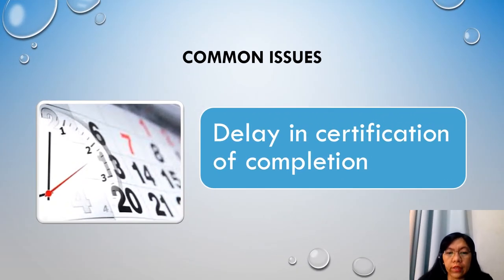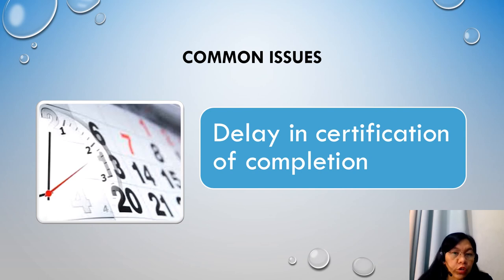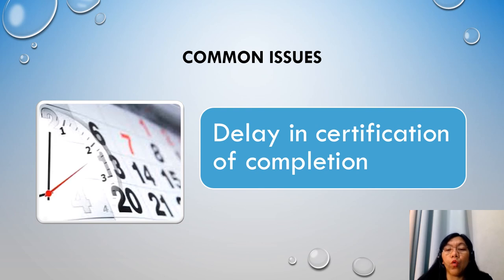The second common issue is delay in certification of completion. It is very common that at the end of a project, the date of completion is subject to some debate. In practice, the date of completion is sometimes agreed and formalized sometime after the actual event has occurred. There may also be a situation where the completion date has not been fixed as extension of time entitlements may still be in discussion. This may result in damages being deducted which shall be recalculated and deducted or refunded as appropriate at the next certificate, once the date of completion or extension of time has been agreed.